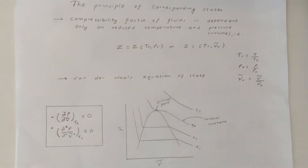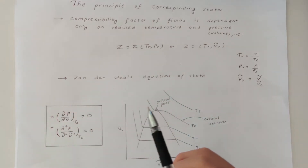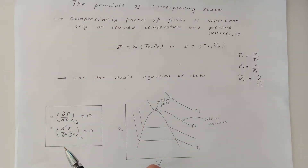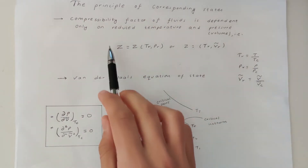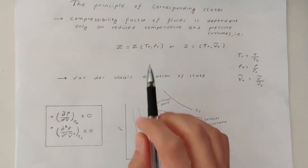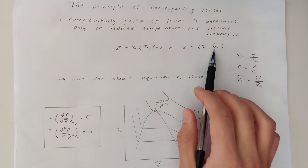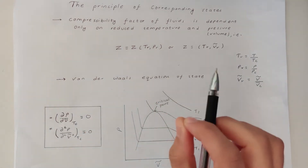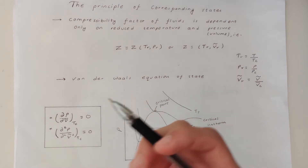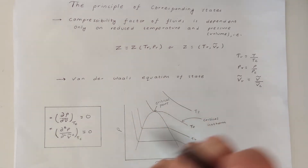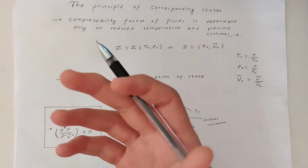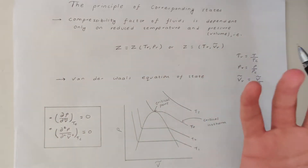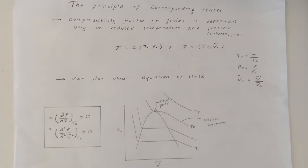For example, if we have two fluids at the same reduced conditions, they are going to have the same compressibility factor, because the compressibility factor is only a function of reduced temperature and reduced pressure or reduced volume. The compressibility factor measures the deviation from ideality, so if two fluids have the same compressibility factor, they are equally deviated from ideality and will behave similarly.